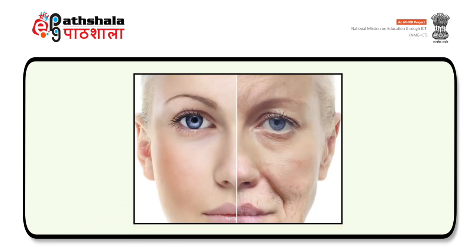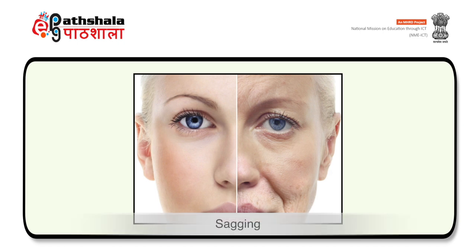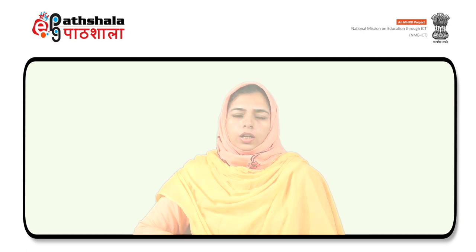You can see the difference between the two faces on screen. The first half of the face is normal skin and the second half shows aging. In the second half, you can see wrinkles, dullness, and sagging on the skin that occurs upon aging.